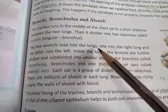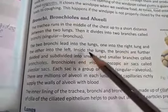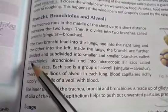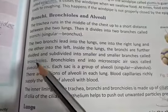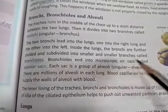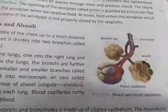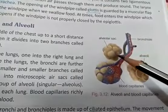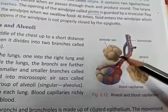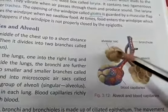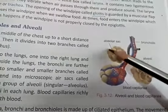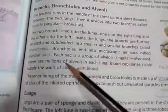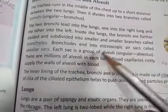The two bronchi lead into the lungs — one into the right lung and one into the left. Inside the lungs, the bronchi are further divided and subdivided into smaller branches called bronchioles. Bronchioles end in microscopic air sacs called alveolar sacs. You can see the bronchiole, and at its terminal end are these balloon-like structures called alveolar sacs — they inflate and deflate.